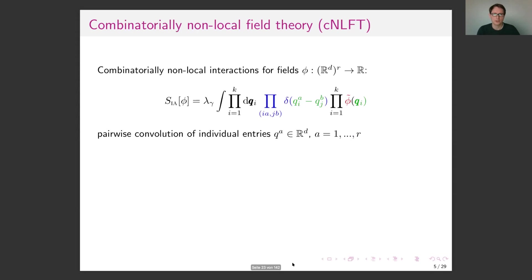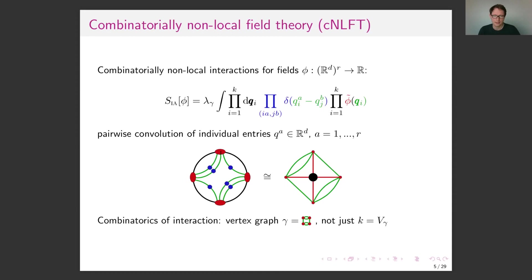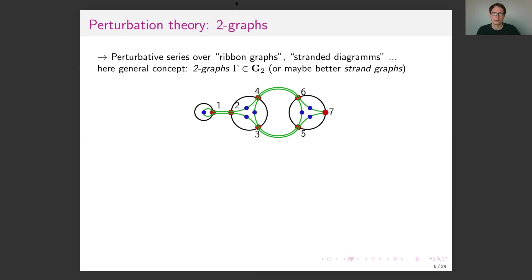In combinatorial non-local field theory, everything is the same except the interactions are now combinatorially non-local. We have a field living on R copies, and we convolute momenta pairwise with momenta of other fields. The structure of such an interaction is given by a graph — the combinatorics of interactions are now vertex graphs. Doing perturbation theory leads to what's called ribbon or stranded diagrams. To make the algebraic structure precise, I introduce a new definition called two-graphs.